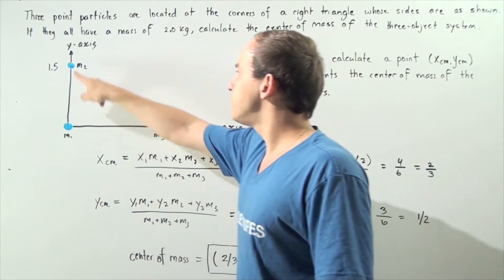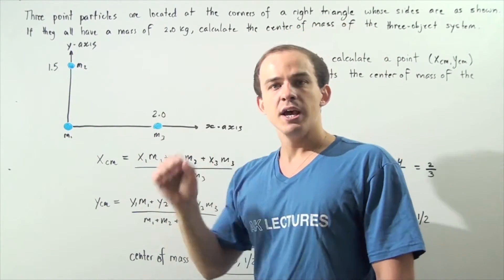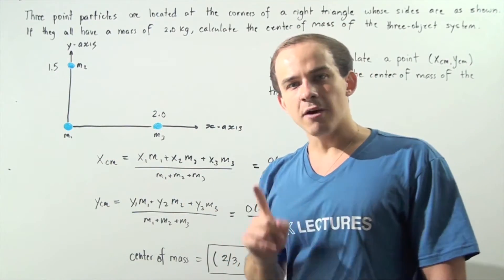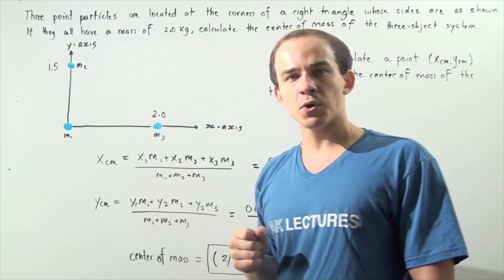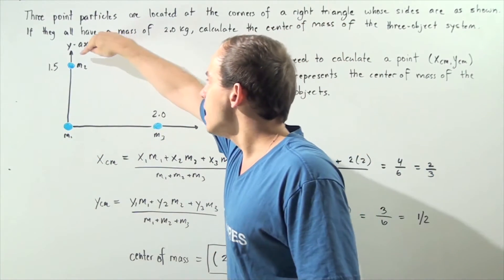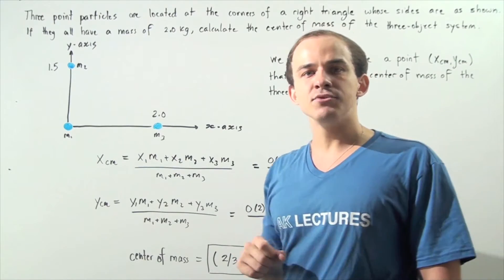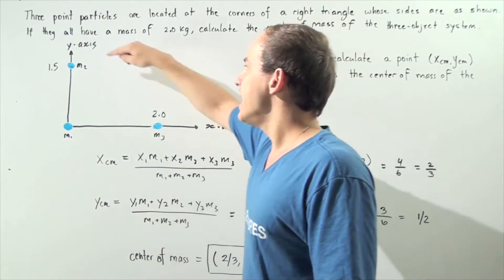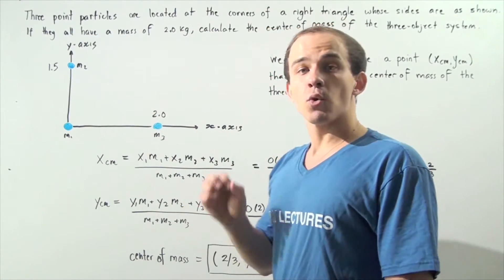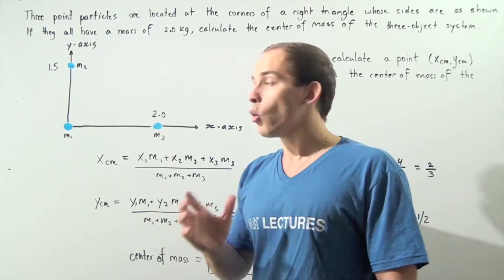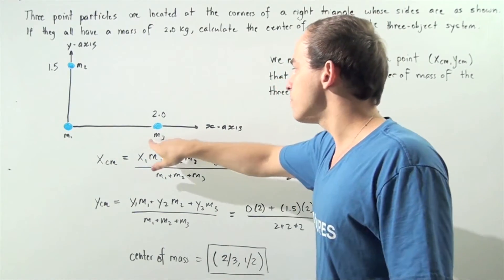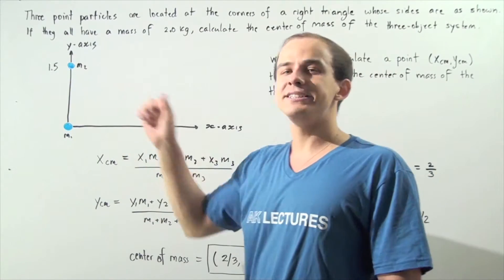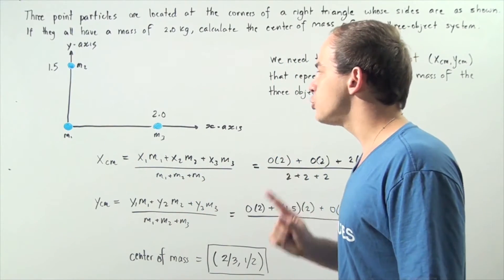We have three point particles located at the corners of a right triangle whose sides are as shown. Point number one with mass M1 is found at the origin. Point number two with mass M2 is found 1.5 units above point number one — it has coordinate (0, 1.5). The last point with mass M3 is found two units to the right of point number one and has the coordinate (2, 0).